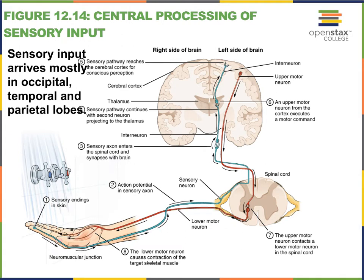Most of our sensory information arrives in specific lobes: visual information arrives in the occipital lobe, hearing information arrives in the temporal lobes, and the parietal lobes are especially involved in somatosensory information.